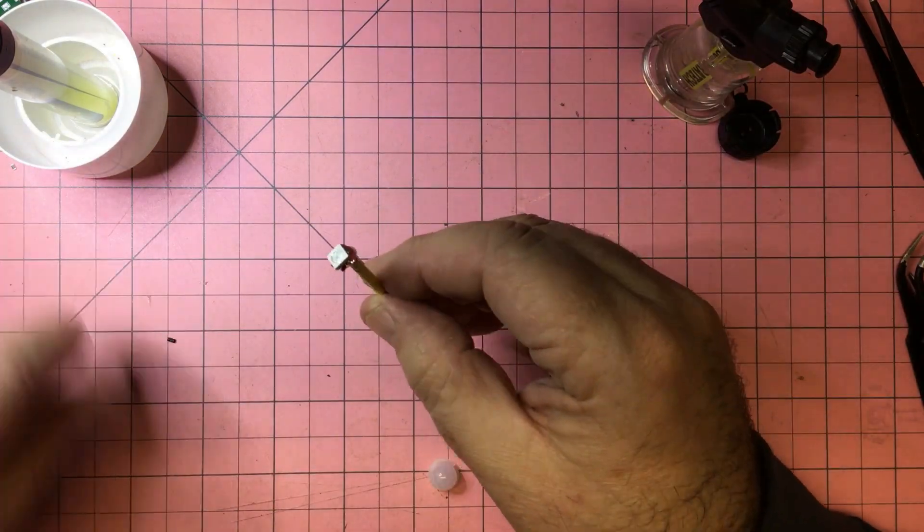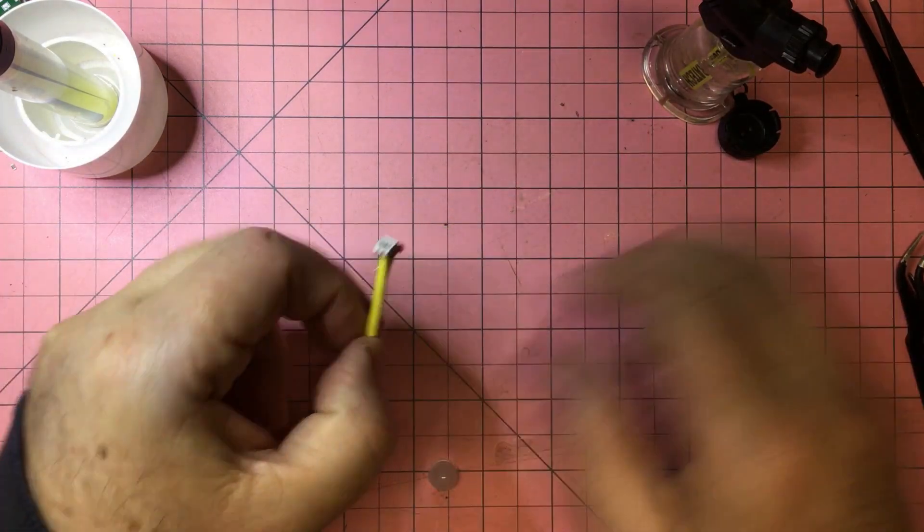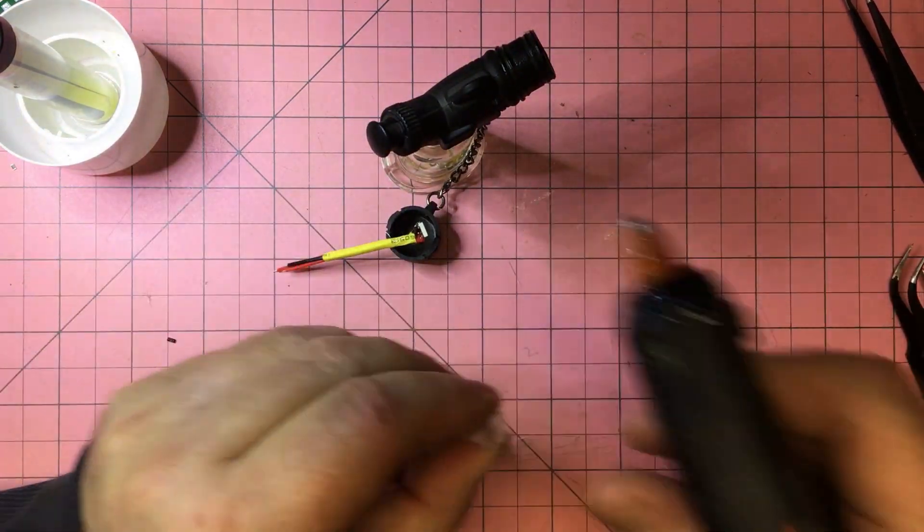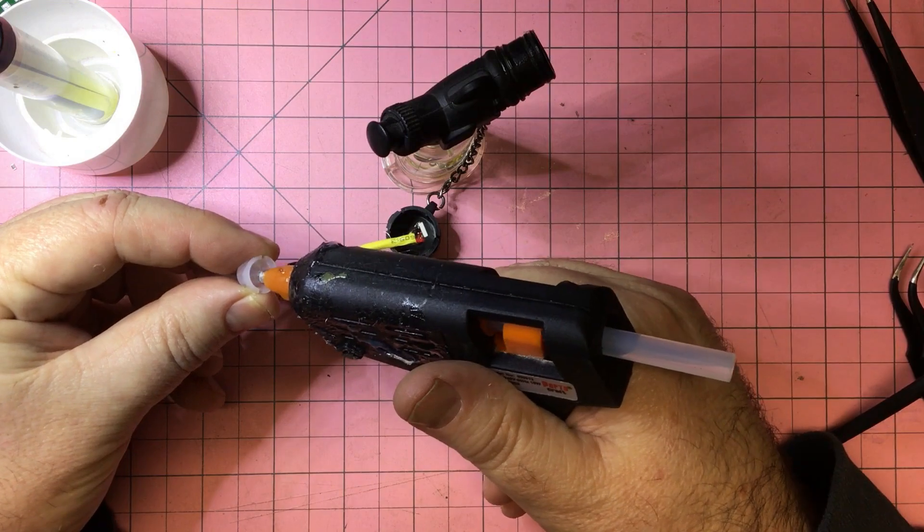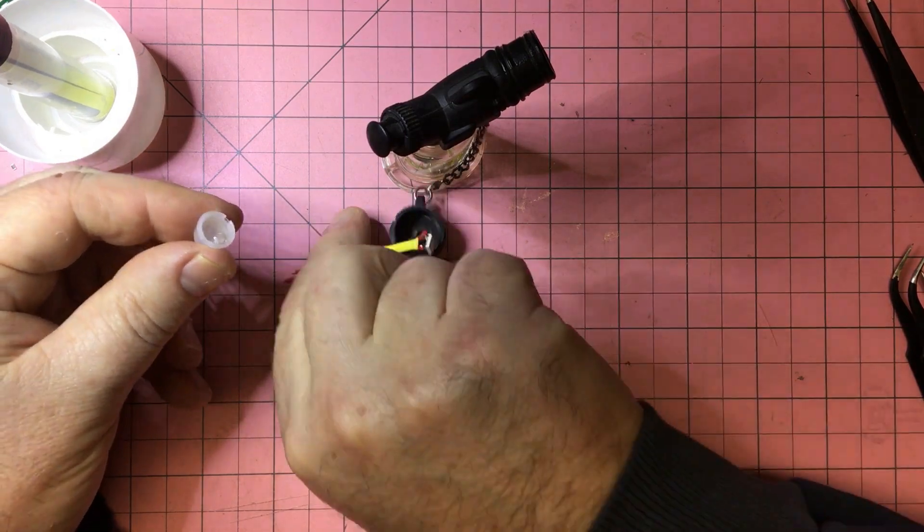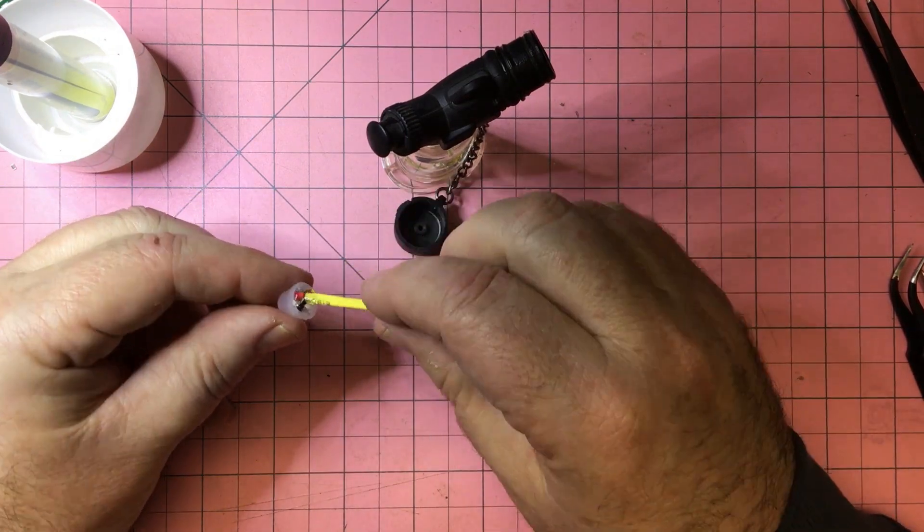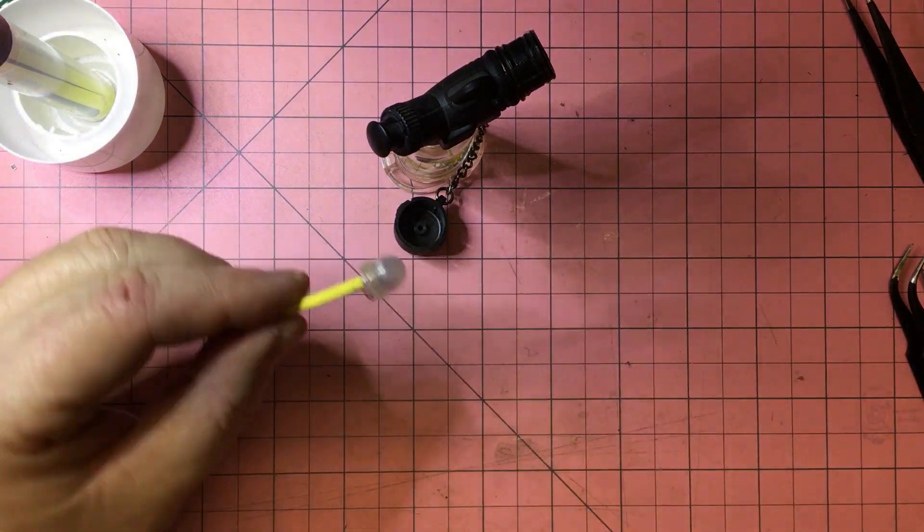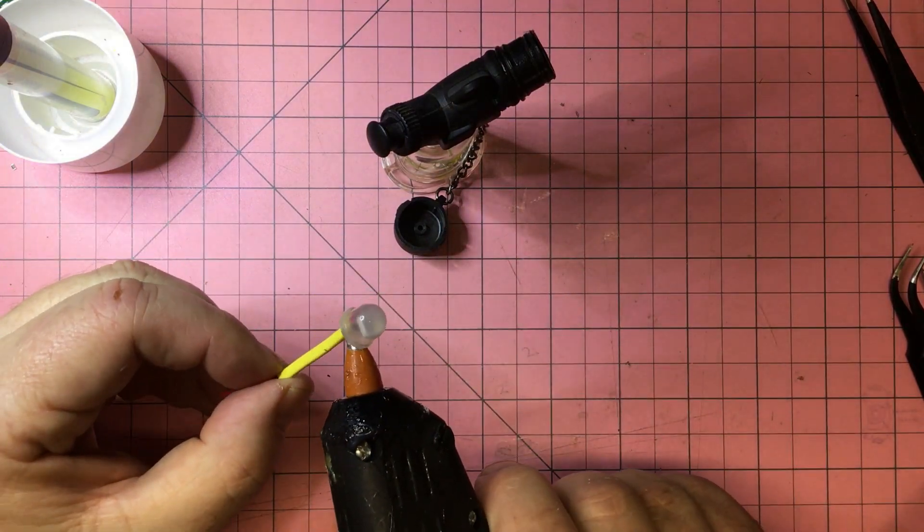And now I'm going to fill up the Fresnel lens with some hot glue as well. And then you get probably about 30 seconds in a Tasmanian winter to work to put that in before it all closes over. A little bit of hot glue in the bottom.